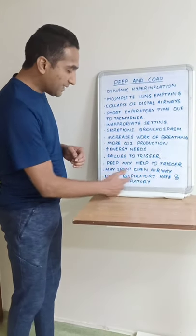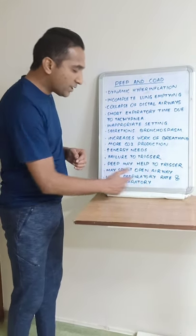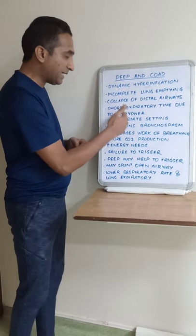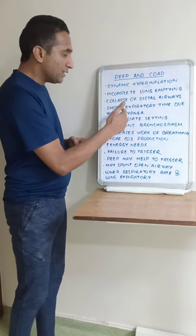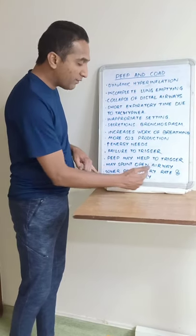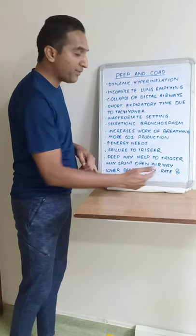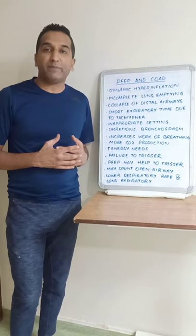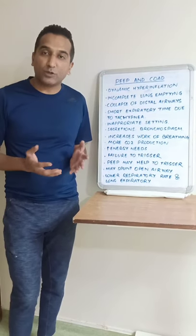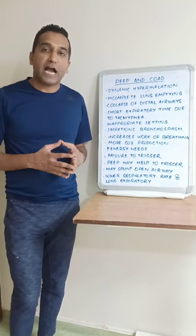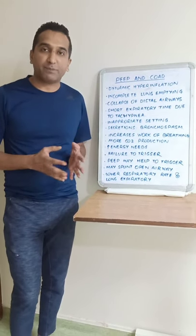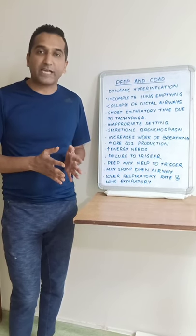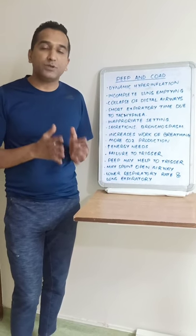The other major contributor to dynamic hyperinflation is tachypnea, so we should target a lower respiratory rate — maybe 10 to 12. Many clinicians get carried away by CO2 retention and try to hyperventilate the patient by giving higher tidal volumes and higher respiratory rates, but that is usually counterproductive.